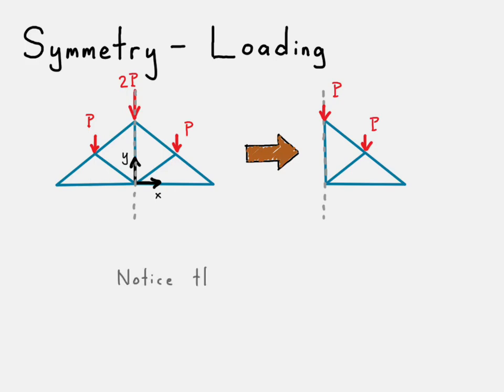Note that P, or pardon me, the load there has been reduced from 2P to P because it is halved. So, just like the previous slide where we said that the cross-sectional area for any bar or line right along the axis of symmetry gets halved, the same is true for any loads lying along the axis of symmetry.